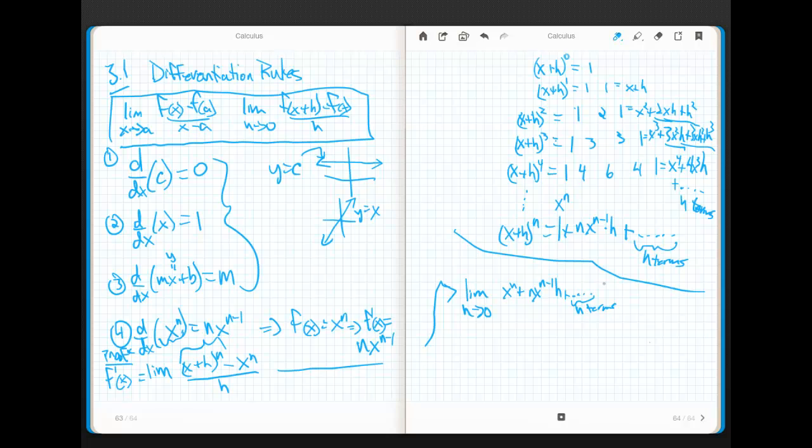Now one thing I do want you to notice is that all of these h terms really have a degree that's higher than 1. It's bigger than 1 because of the way that a binomial expansion works. So this is what this is right here. And then I subtract out my x to the n, and I divide by h. Watch what happens. Goodbye. Goodbye.